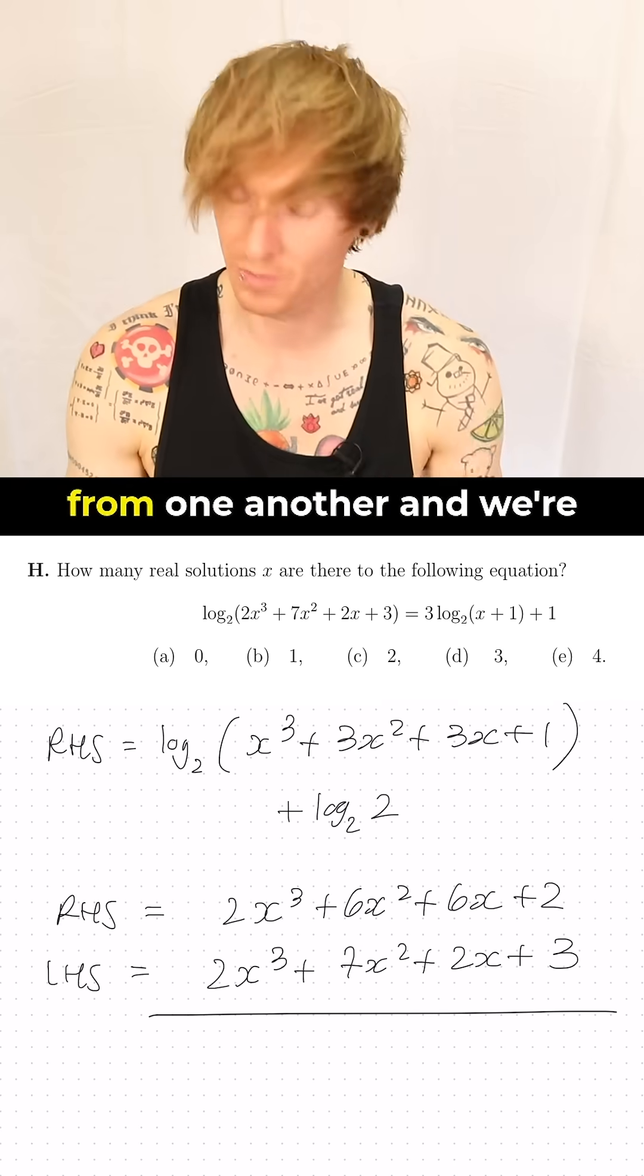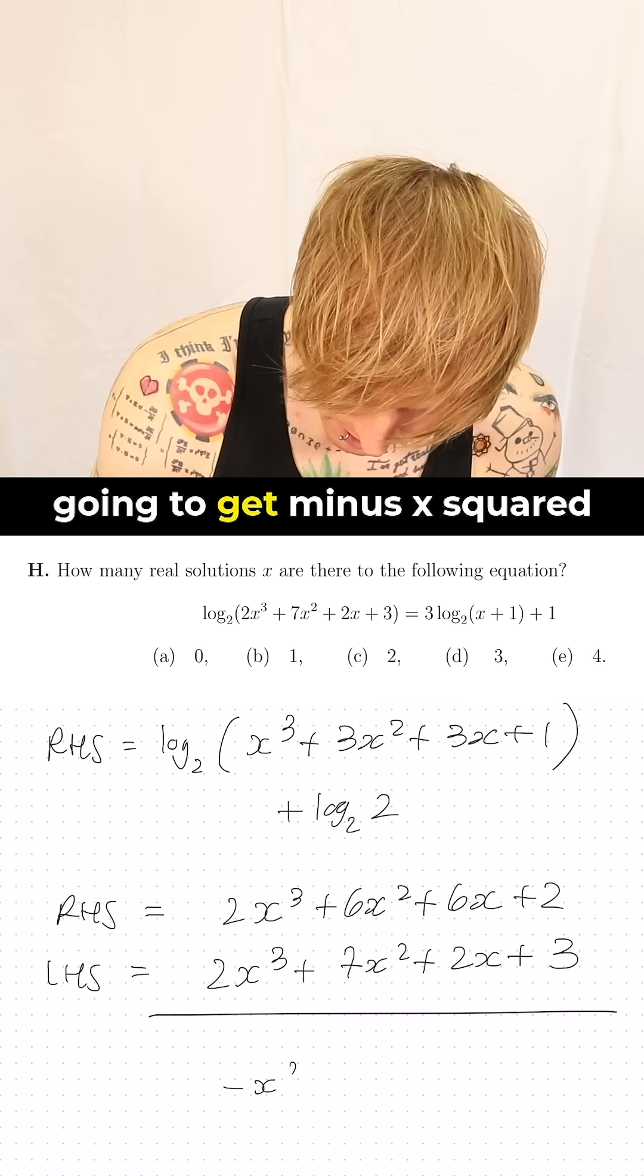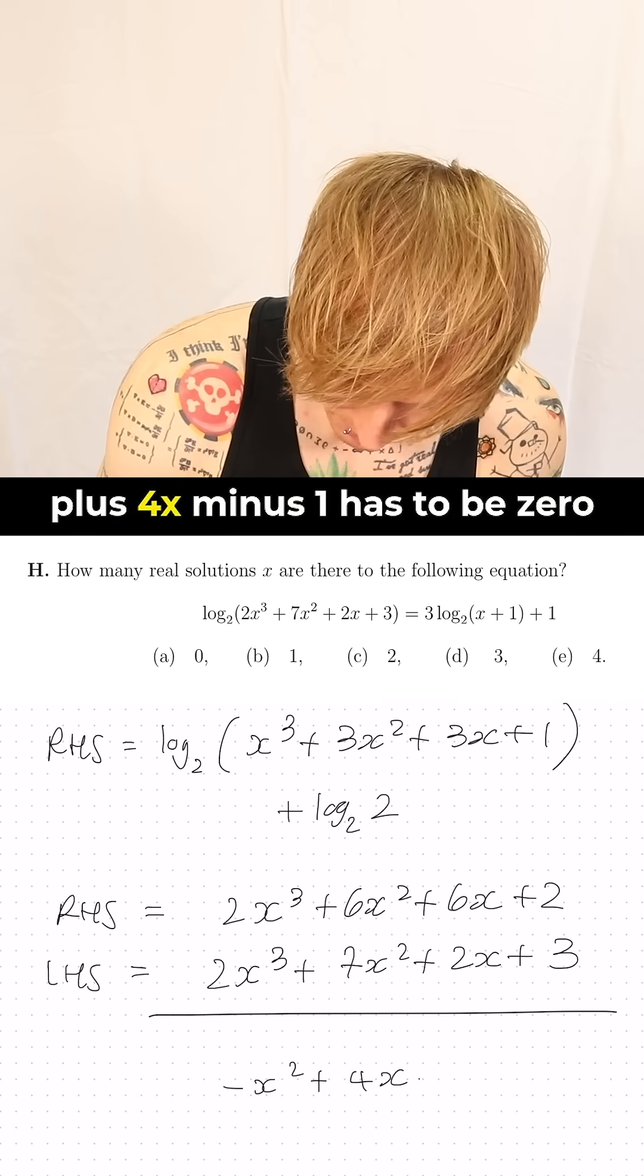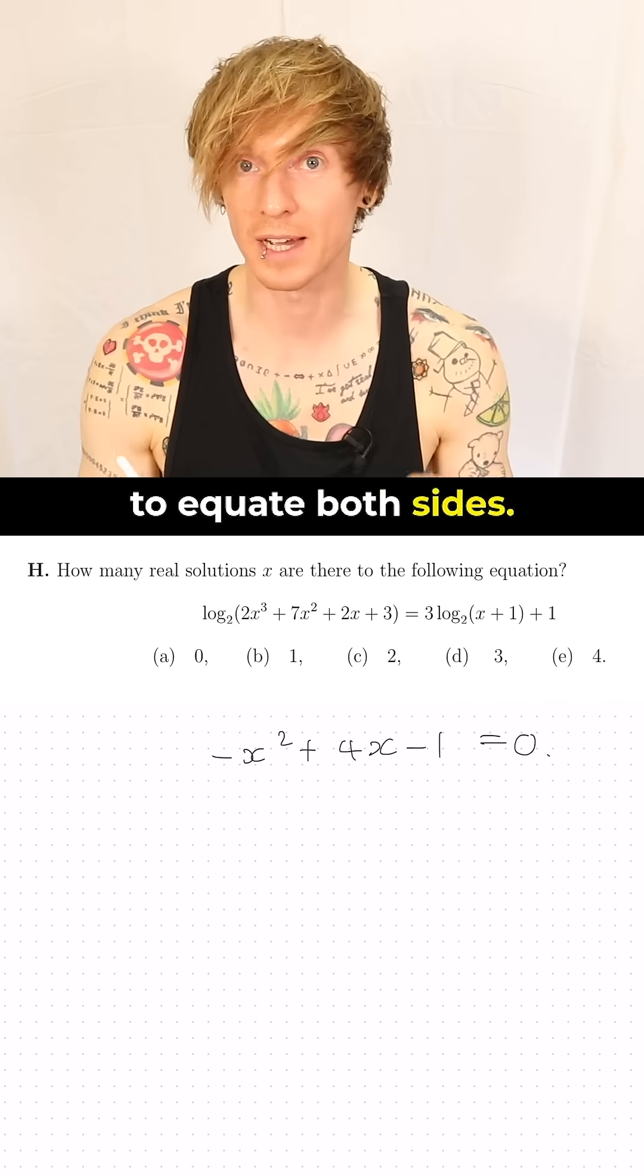So we can now subtract these from one another and we're going to get minus x squared plus 4x minus 1 has to be 0 to equate both sides.